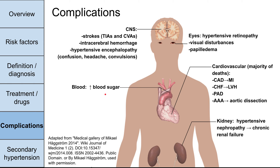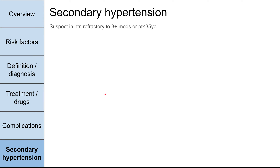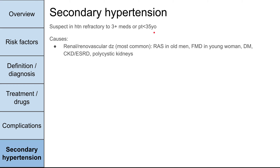We've been talking about the 95% of cases called essential hypertension. The other 5% are due to other processes, collectively known as secondary hypertension. Suspect secondary hypertension in patients whose hypertension is refractory to three or more medications, or in patients younger than 35. As the obesity epidemic worsens, this age range may decrease. The most common cause is renal disease and renovascular problems, including renal artery stenosis in older men and fibromuscular dysplasia in young women. Diabetes, chronic kidney disease, end-stage renal disease, and polycystic kidneys can also increase blood pressure.